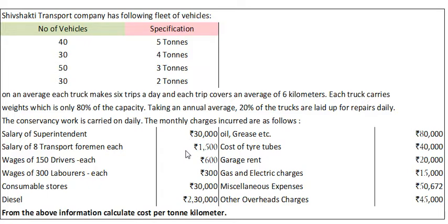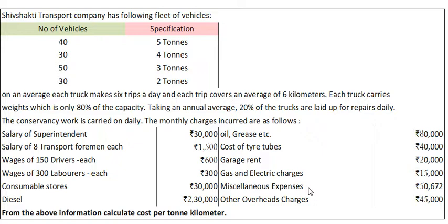Salary of 8 transport foremen each Rs. 1,500. Wages of 150 drivers each Rs. 600. Wages of 300 laborers each Rs. 300. Consumable stores Rs. 30,000. Diesel Rs. 2,30,000. Oil and grease etc. Rs. 80,000. Cost of tyre tubes Rs. 40,000. Garage rent Rs. 20,000. Gas and electric charges Rs. 15,000. Miscellaneous expenses Rs. 50,672. And other overhead charges Rs. 45,000. From this information, we have to calculate cost per ton km.